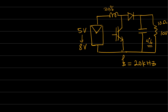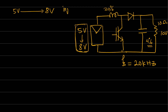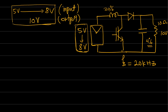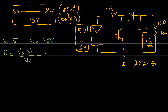To solve this, we note the input voltage ranges from 5V to 8V while the output is fixed at 10V, so we need to find the range of duty cycles. For the boost converter, Δ = (V_out − V_input) / V_out. When V_input = 5V: Δ = (10 − 5) / 10 = 0.5. The average inductor current is V_input / ((1 − Δ)² × R) = 5 / (0.5² × 10) = 2 A.